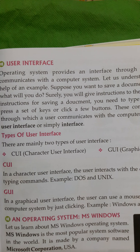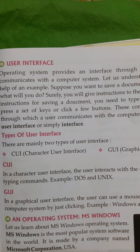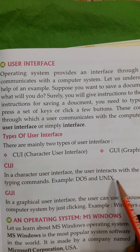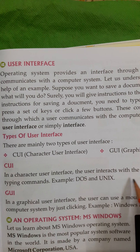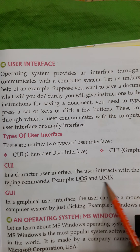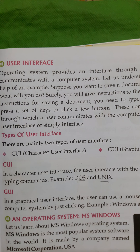Types of User Interface: There are two types of user interface. First, CUI — Character User Interface. Second, GUI — Graphical User Interface. In a Character User Interface, the user interacts with the computer system by typing commands. Examples are DOS and UNIX. In CUI, you have to remember lots of commands to get your work done.